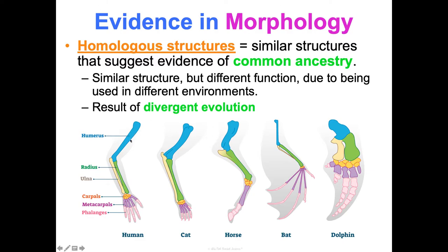Look at this picture showing the forearms of humans, cats, horses, bats, and dolphins. They all have the same arrangement of bones: the humerus, then the radius and ulna, carpals, metacarpals, and phalanges. Even though the sizes may differ and some are reduced or extended, the arrangement is the same. These are homologous structures and evidence of divergent evolution — all five species share some common ancestor they all diverged from. The more shared structures you have in common, the more closely related you are considered to be evolutionarily.